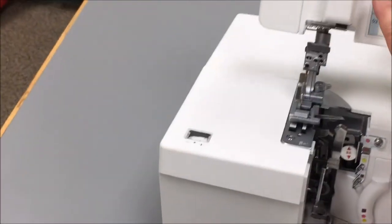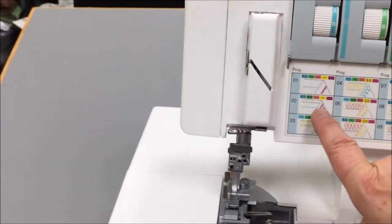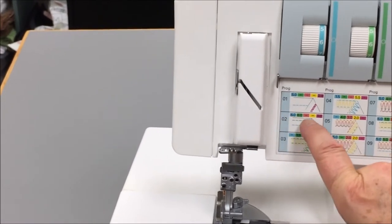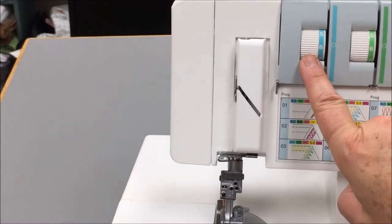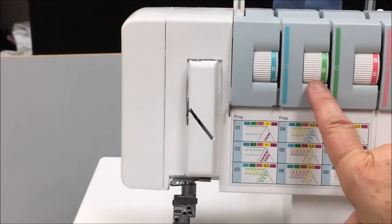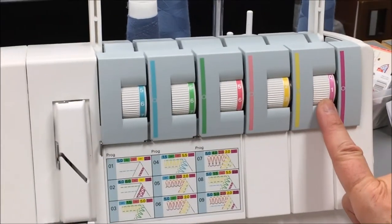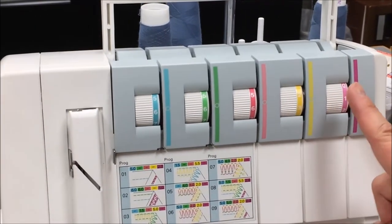We're going to open up the machine. I'm going to just show you some guides here. The number two stitch is what we are going to be doing. Our tension is already shown here: six for the left needle, six for the right needle, and one for the cover lock looper.